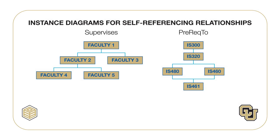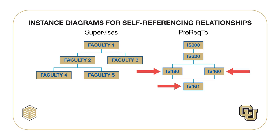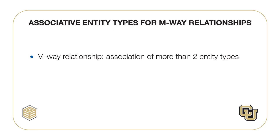An instance diagram can help you understand the difference. The hierarchy in part A shows an instance diagram for the supervisors relationship. Notice that each faculty has at most one superior; for example, faculty two and faculty three have faculty one as a superior. Therefore, supervisors is a one-to-many relationship because each faculty can have at most one supervisor. In contrast, there is no such restriction for the prerequisite relationship: IS 461 has two prerequisites, IS 480 and IS 460, while IS 320 is a prerequisite to both IS 480 and IS 460. Therefore, prerequisite is a many-to-many relationship because a course can be a prerequisite to many courses and a course can have many prerequisites.